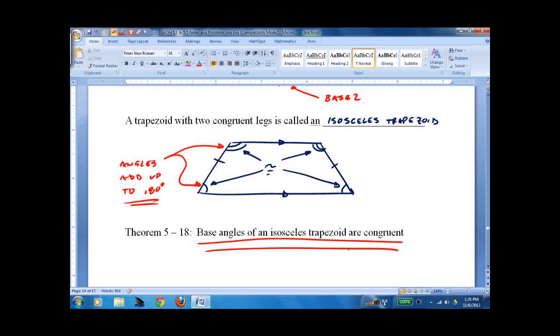Base angles of an isosceles trapezoid are congruent. And the same side interior angles, like always, add up to 180 degrees.